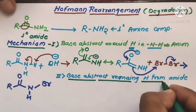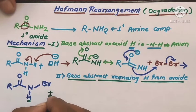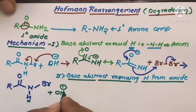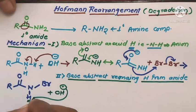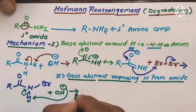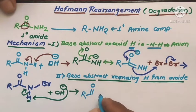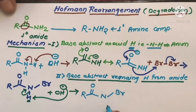In the next step, the base abstracts the remaining proton present on the bromo amide. This proton is abstracted by the base to form the bromo amide anion. The base abstracts the remaining proton atom from the amide molecule, giving the anion RC(=O)N⁻Br.